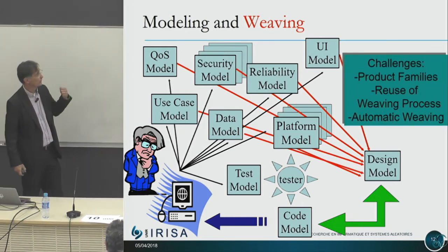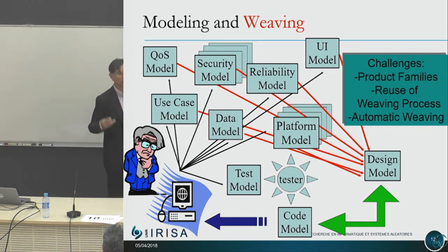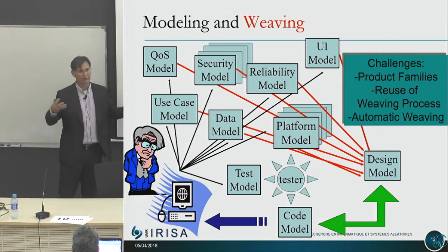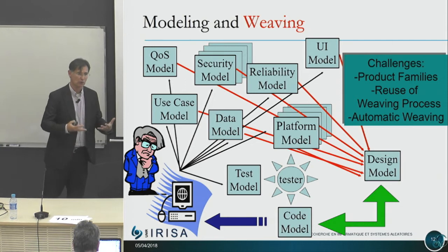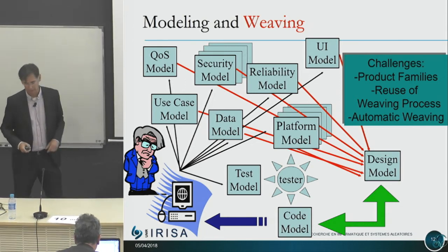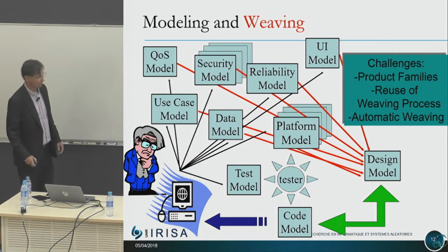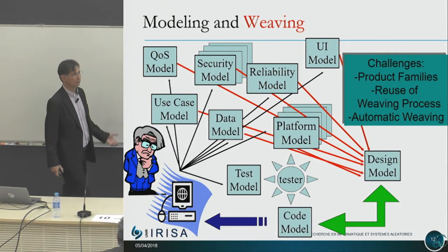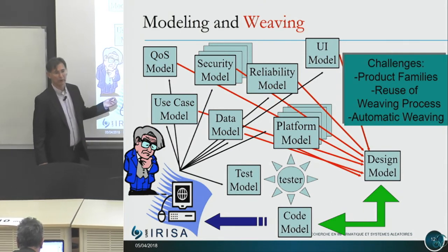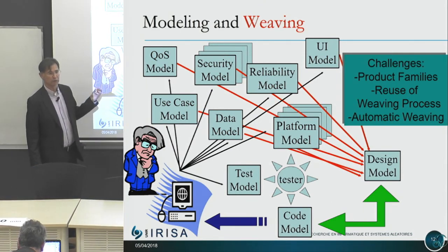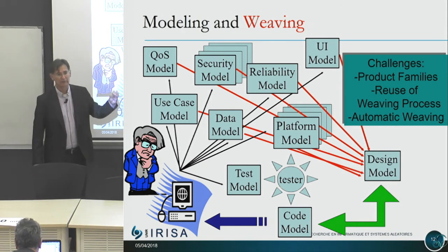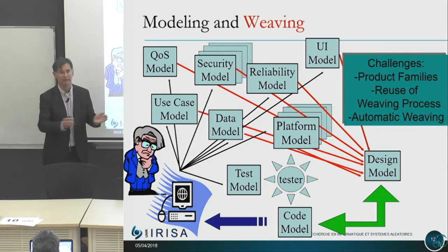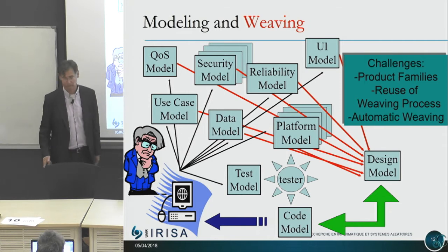One of the big challenges is to automate this weaving process — the composition of many aspects. We know how to separate aspects and describe them, but composing them in a very general way is still an open challenge. This is connected with product lines: in any big software today, you don't just want one specific version, but depending on countries and customers, you have many variants to handle.